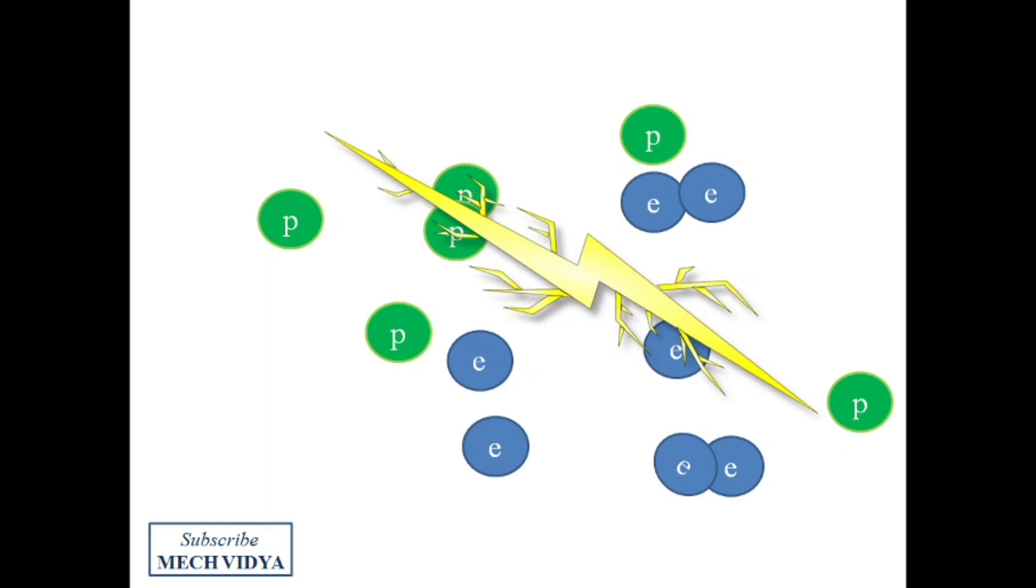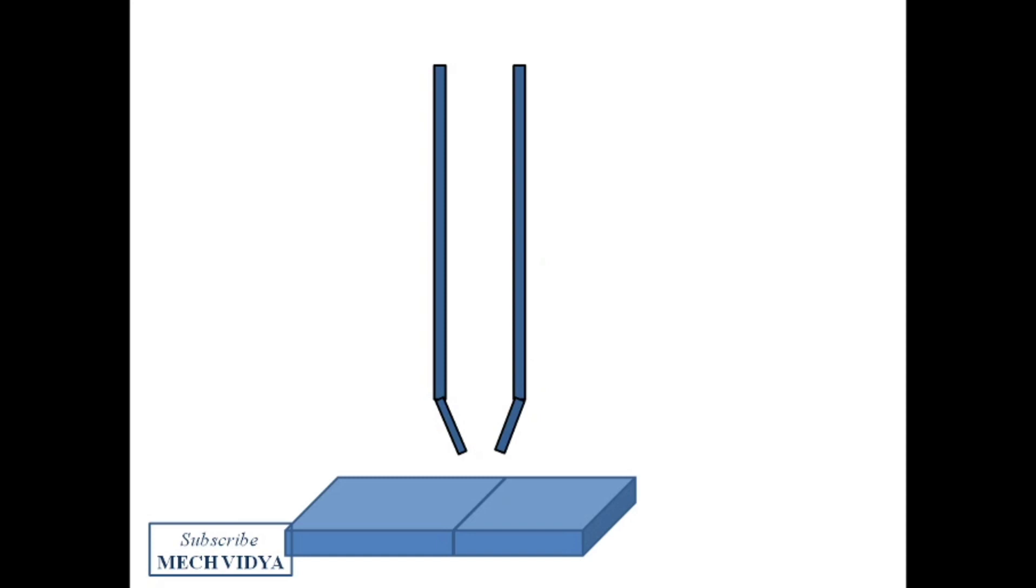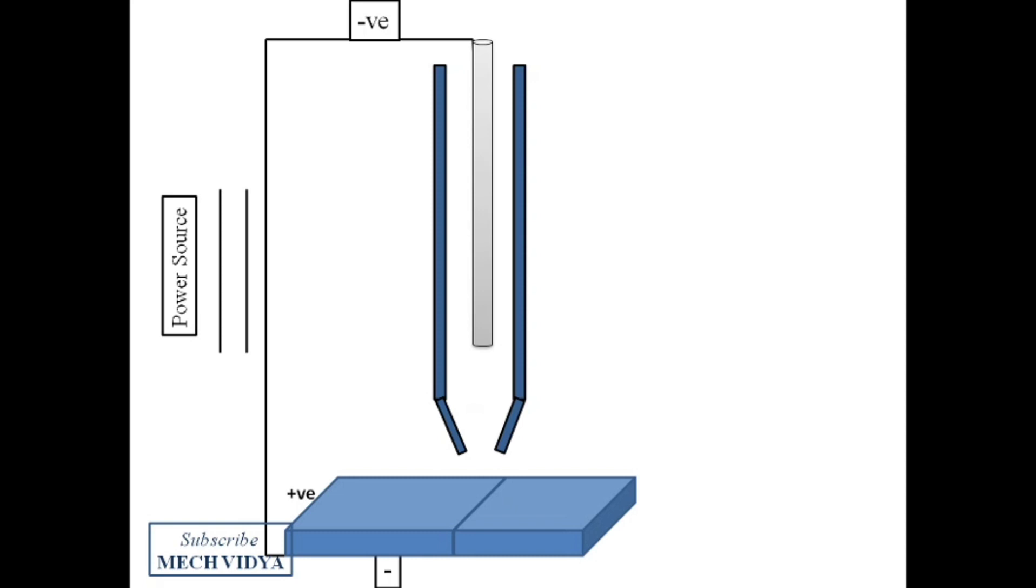Now let us see how we can weld metals using this plasma. Suppose we have two workpieces which are to be welded. Now a nozzle is introduced. An electrode connected to a DC supply is kept in between the nozzle. Now inside the nozzle, we will inject argon or helium gas which is to be converted into the plasma state.